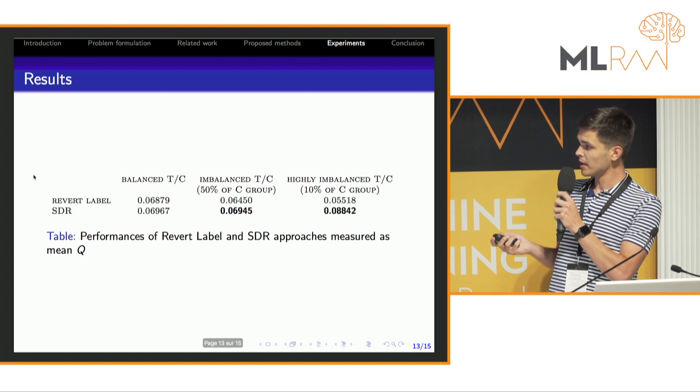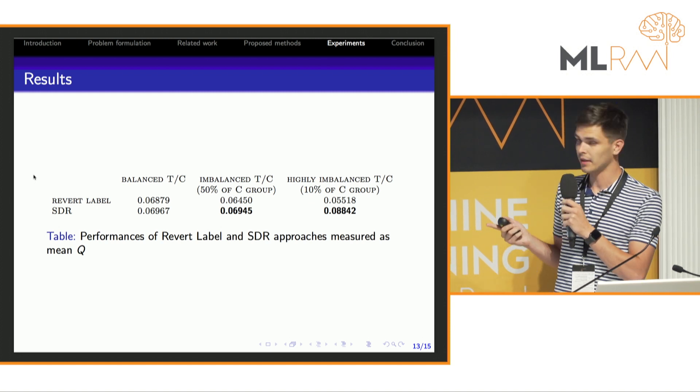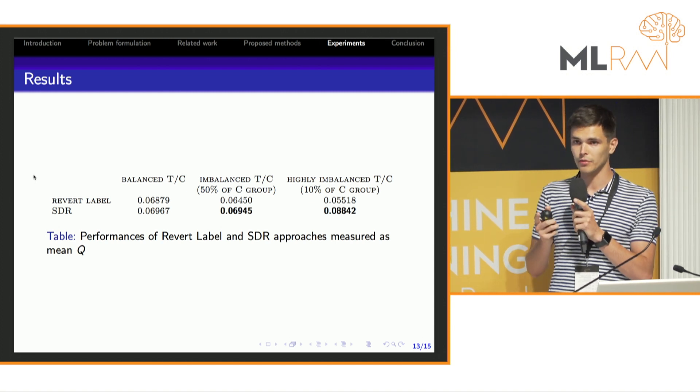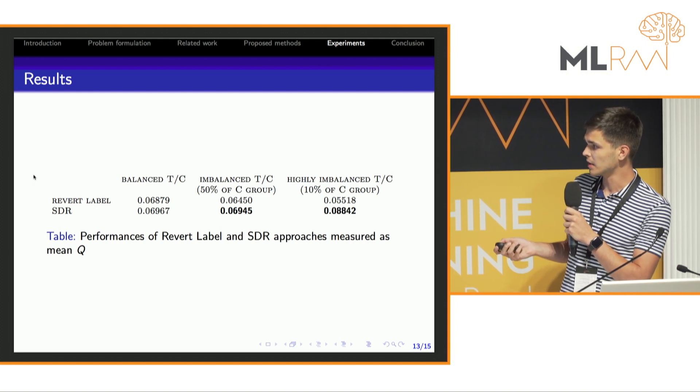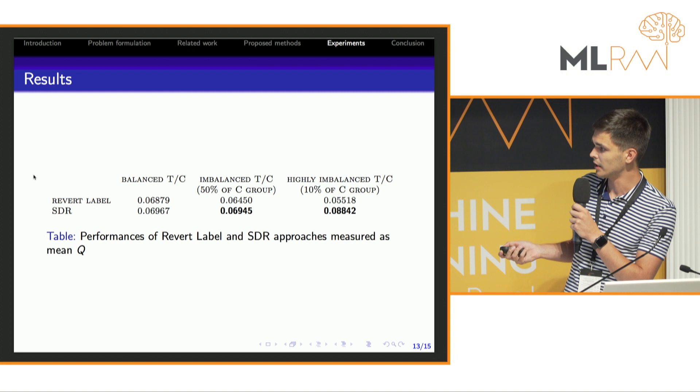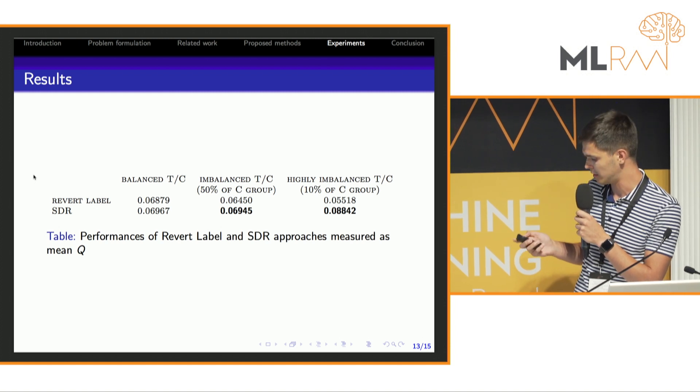Then we compare reward label with SDR as they have a similar nature of learning. Again, in imbalanced cases, SDR looks significantly better than reward label.